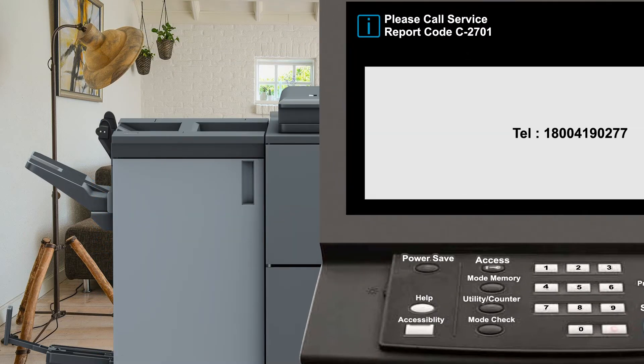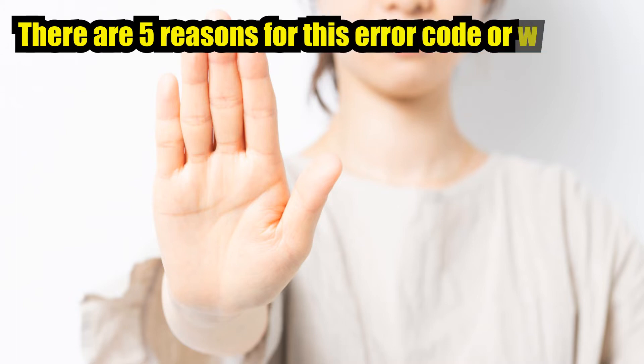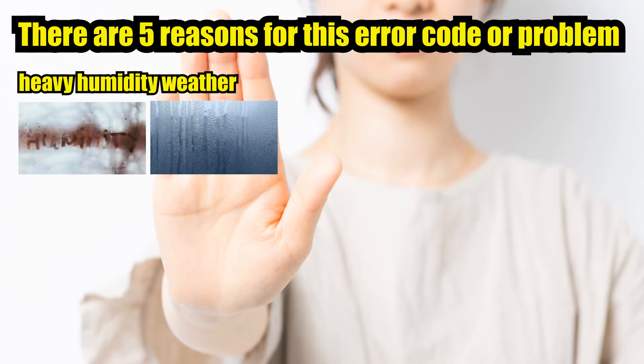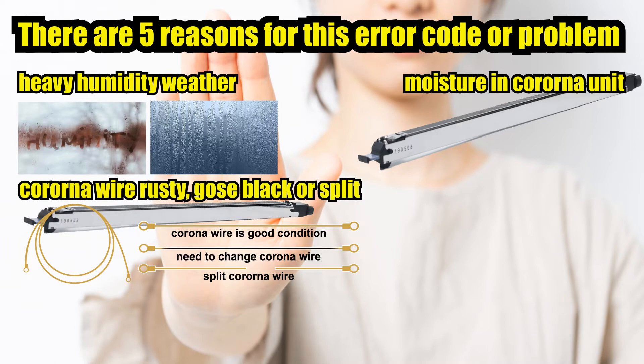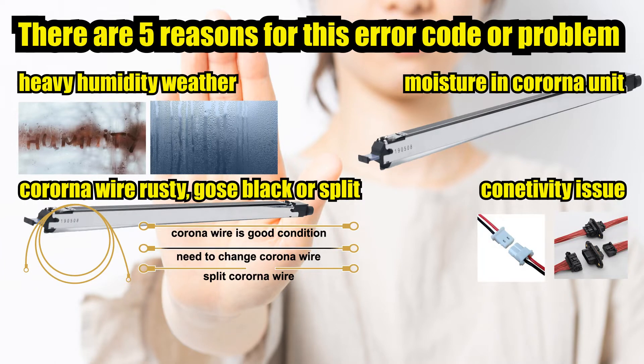Now we're going to know what is causing this problem or this error code. There are five reasons for this error code or problem: heavy humidity, weather moisture, corona unit, corona wire rusty or black or split, connectivity issue, and at last, problem in high voltage unit or printer control board PRCB.